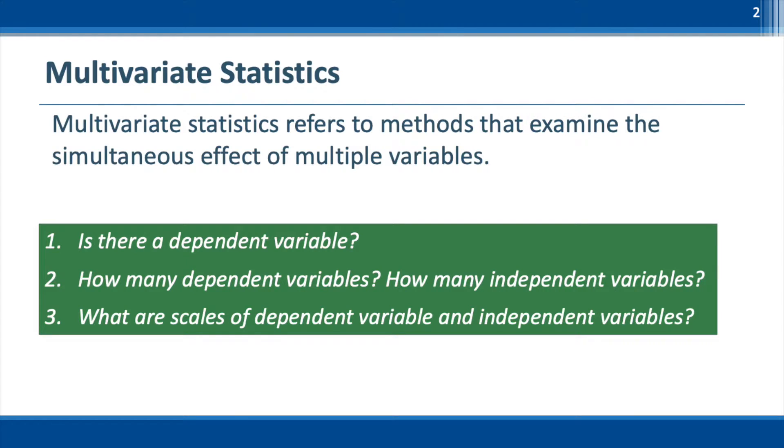Multivariate analysis refers to all statistical techniques that simultaneously analyze multiple measurements on individual objects under investigations. Accordingly, any analysis of more than two variables can be loosely considered multivariate analysis. Many multivariate techniques are extensions of univariate analysis and or bivariate analysis.